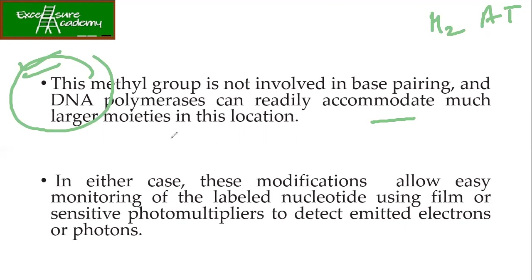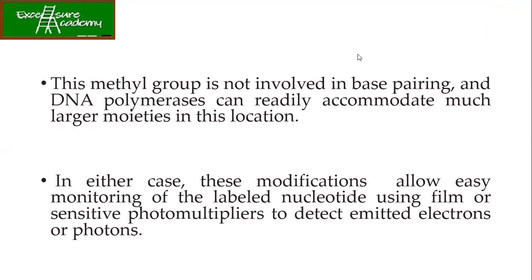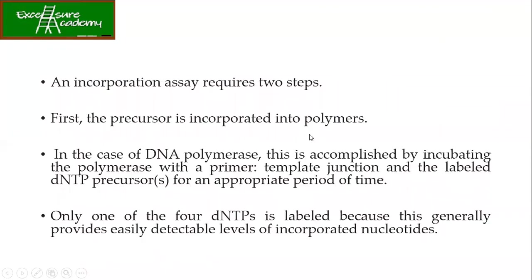In either case, these modifications allow easy monitoring of the labelled nucleotide using film or the photomultiplier to detect the emitted electrons or photons. So it has about two steps, of course. First is the precursor is getting incorporated into the polymers.